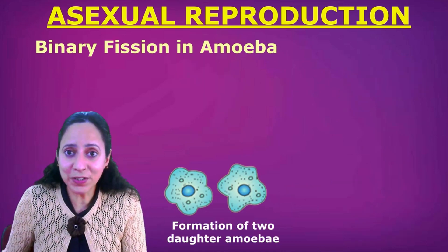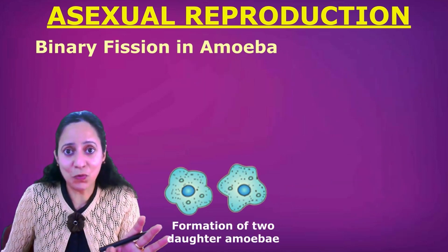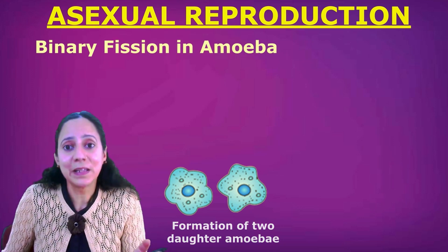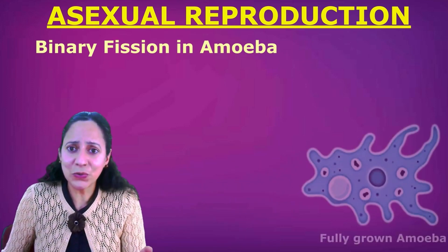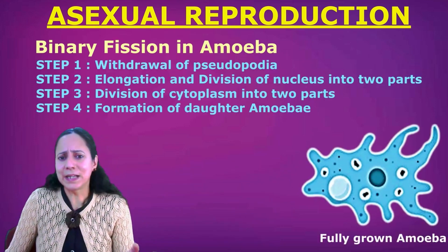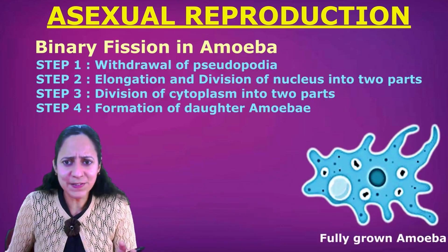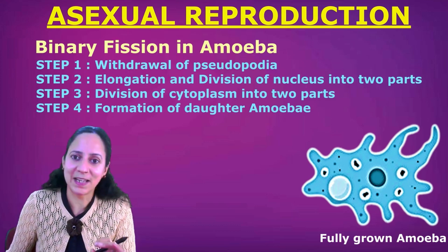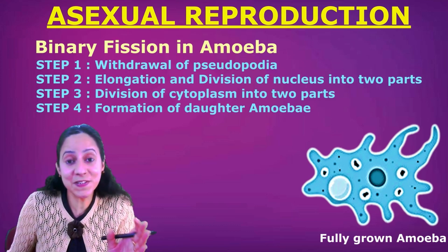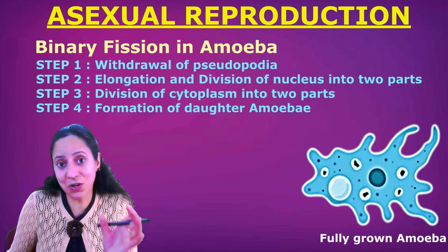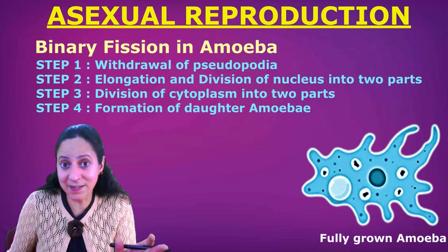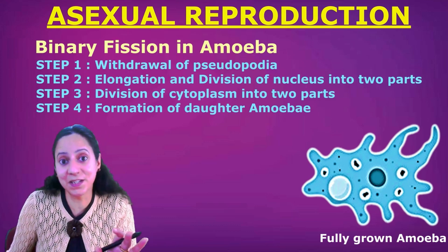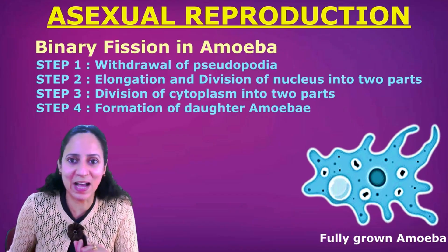These daughter amoebae so formed also grow and attain their full size before splitting again. This is how the continuation of amoeba as a species occurs generation after generation.